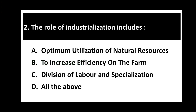Question number two. The role of industrialization includes — options are: optimum utilization of natural resources, to increase efficiency on the farm, division of labor and specialization, and option D, all of the above. The right option is D, all of the above. The role of industrialization includes optimum utilization of natural resources, increasing efficiency on the farm, and division of labor and specialization.